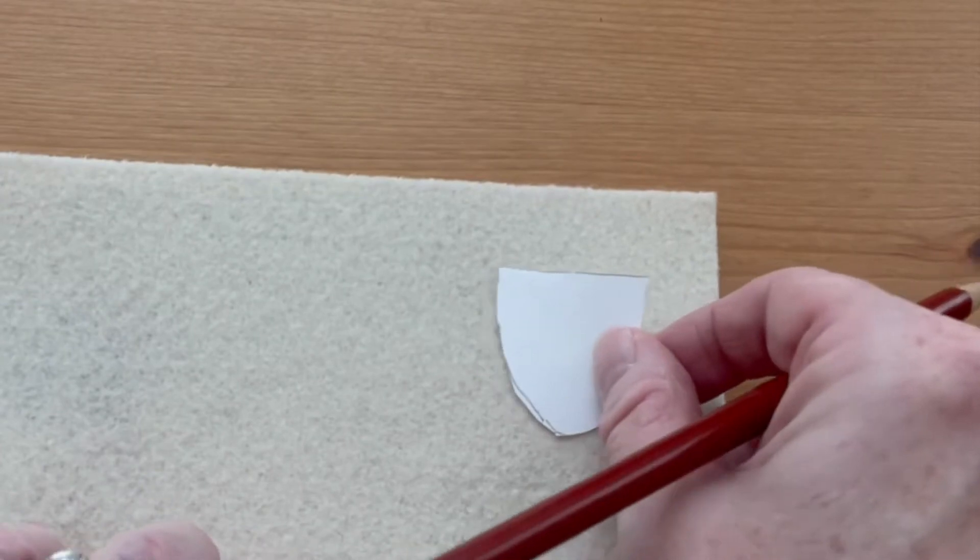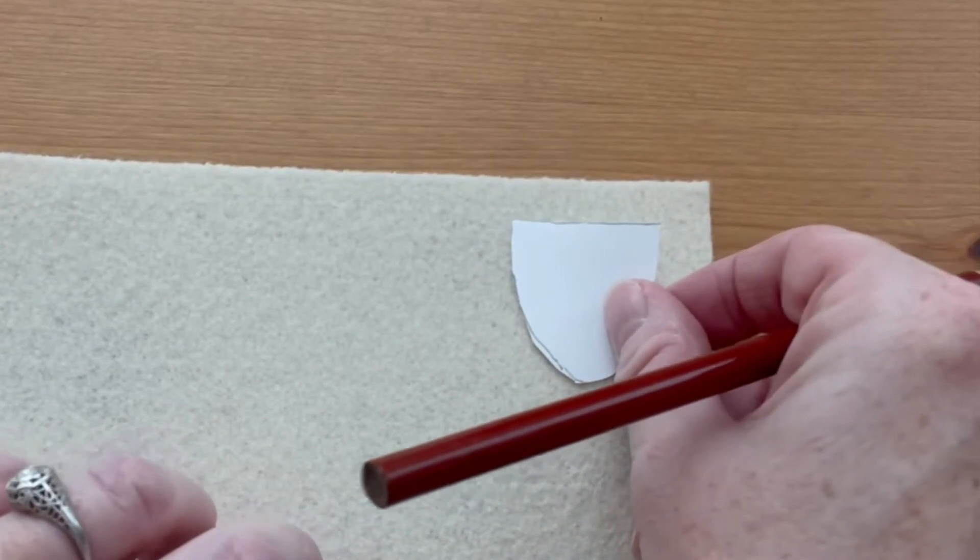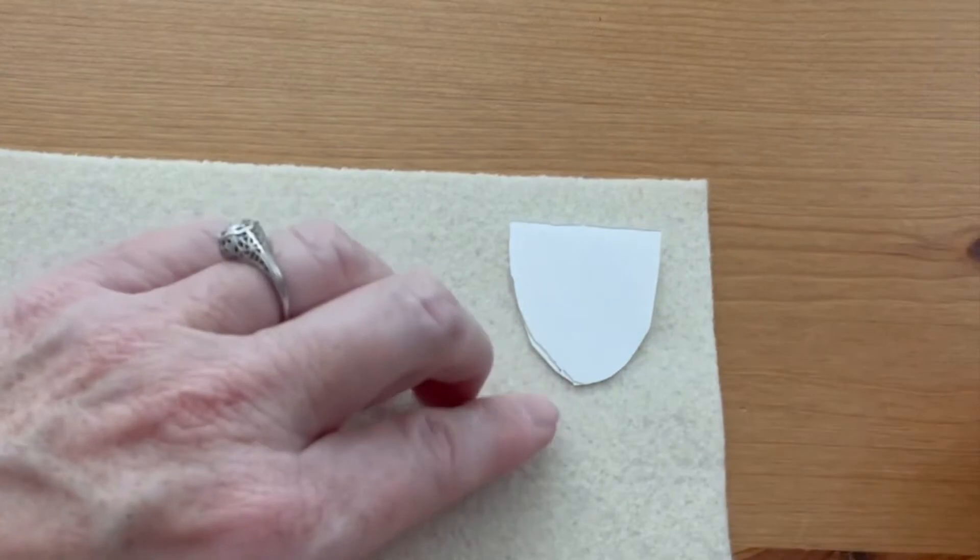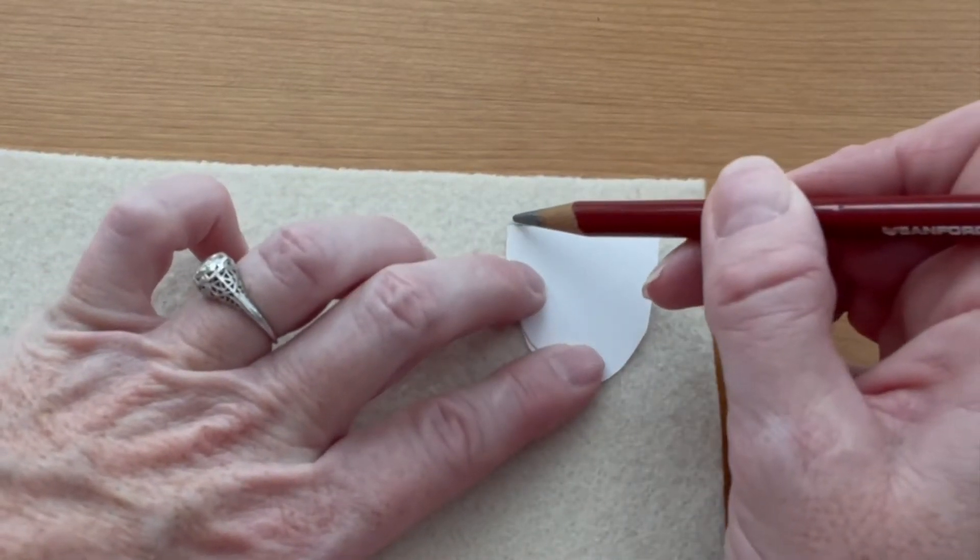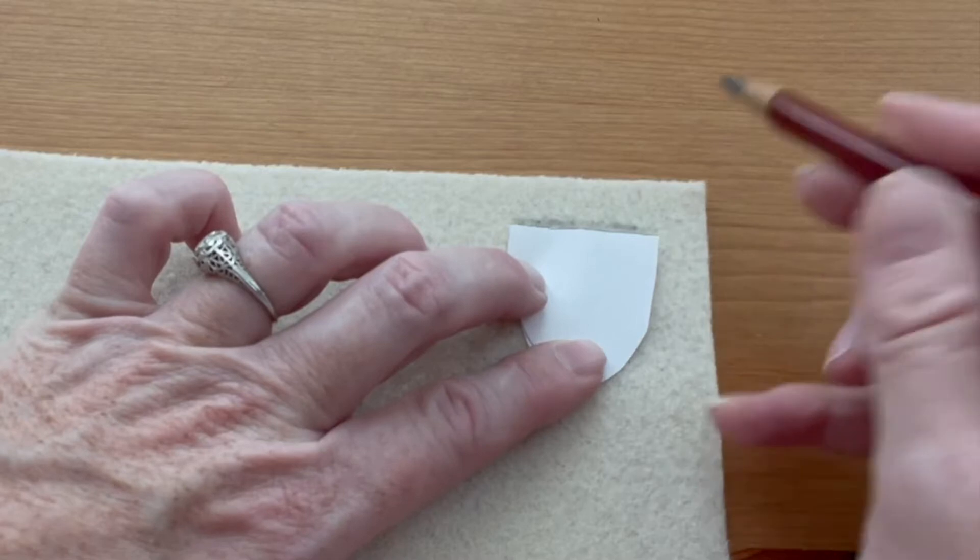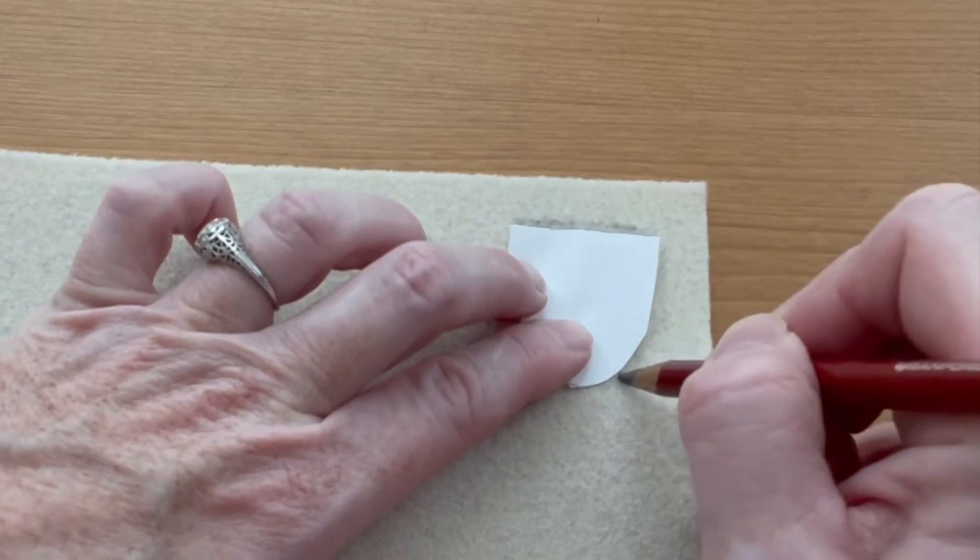So this is the part that's going to take a little while, is cutting out all your shapes. So put on a good TV show, and the easiest way is to trace the patterns rather than trying to cut around them directly.